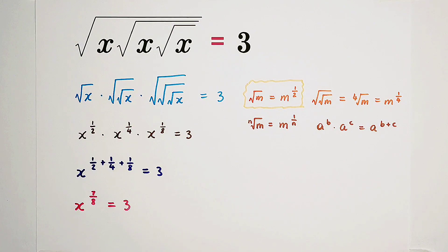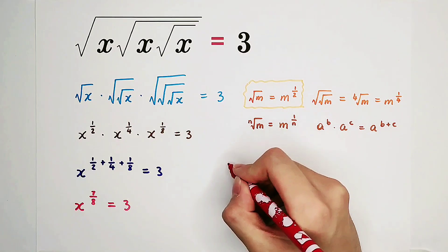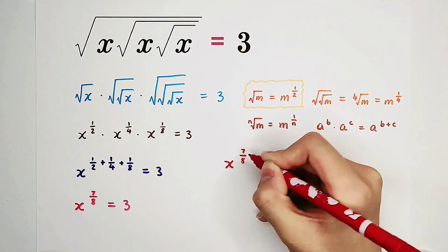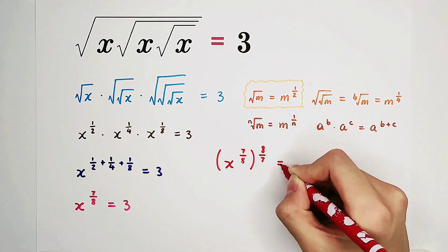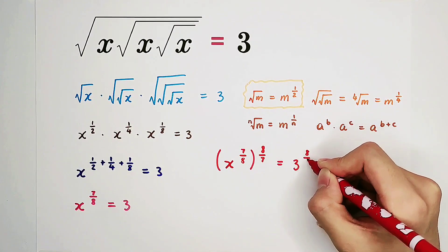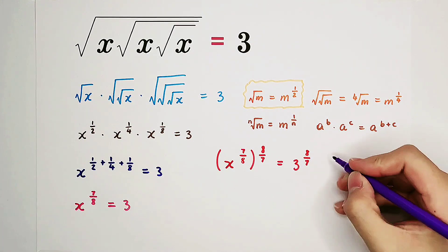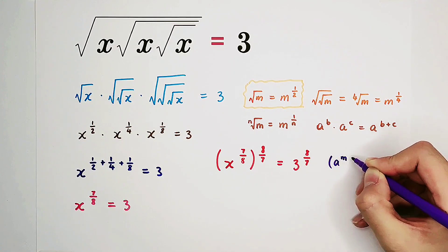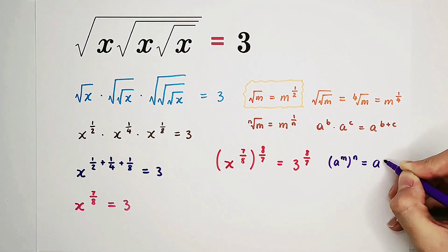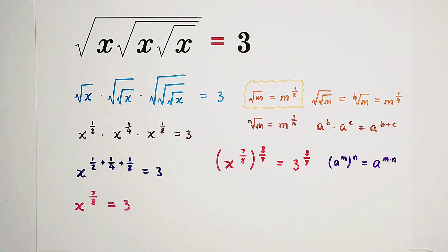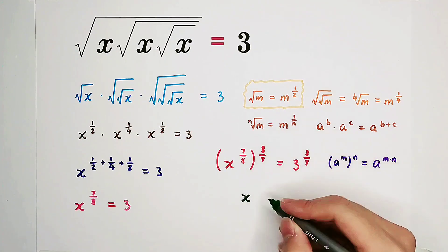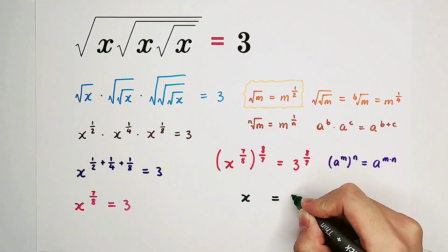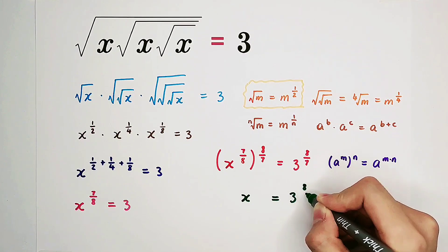So we'll take a new power, and the power will be the reciprocal of this exponent. This gives us 7 over 8, and we will take 8 over 7 as the new power. We have the formula a to the power of m, all to the power of n, equals a to the power of m times n. So this one is x to the power of 1 — the product equals 1 — and the right-hand side is 3 to the power of 8 over 7.